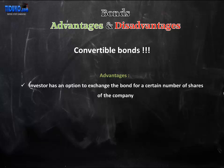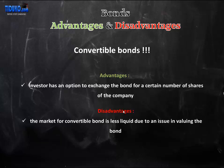Convertible bonds. The advantage of convertible bonds is that it gives the investor an option to exchange the bond for a certain number of shares of the company. Convertible bonds are usually issued by companies that are having problems raising capital. The disadvantage is that the market for convertible bonds is less liquid, due to the difficulty in understanding and evaluating whether the price of the bond is right or not.